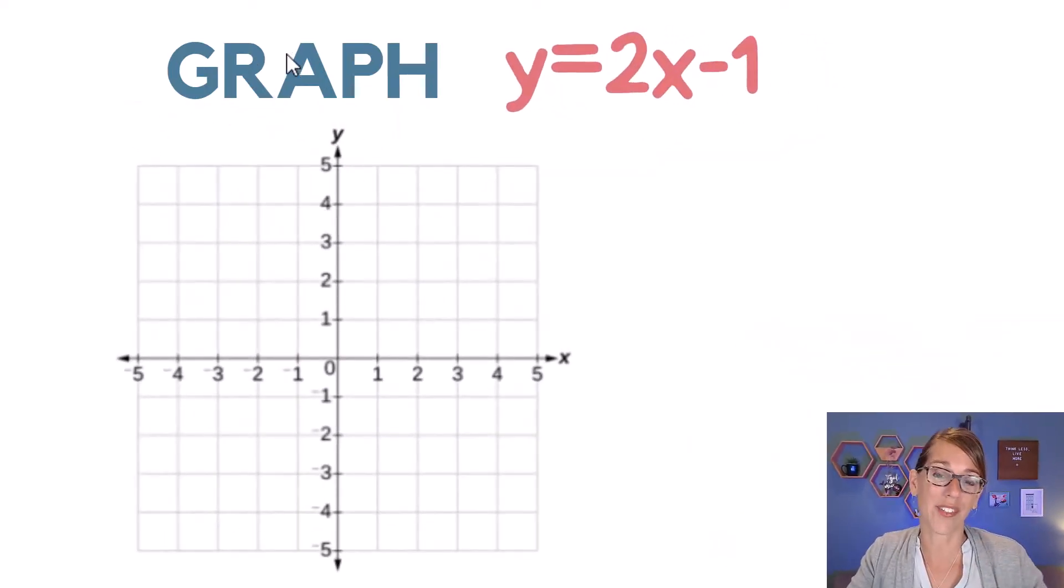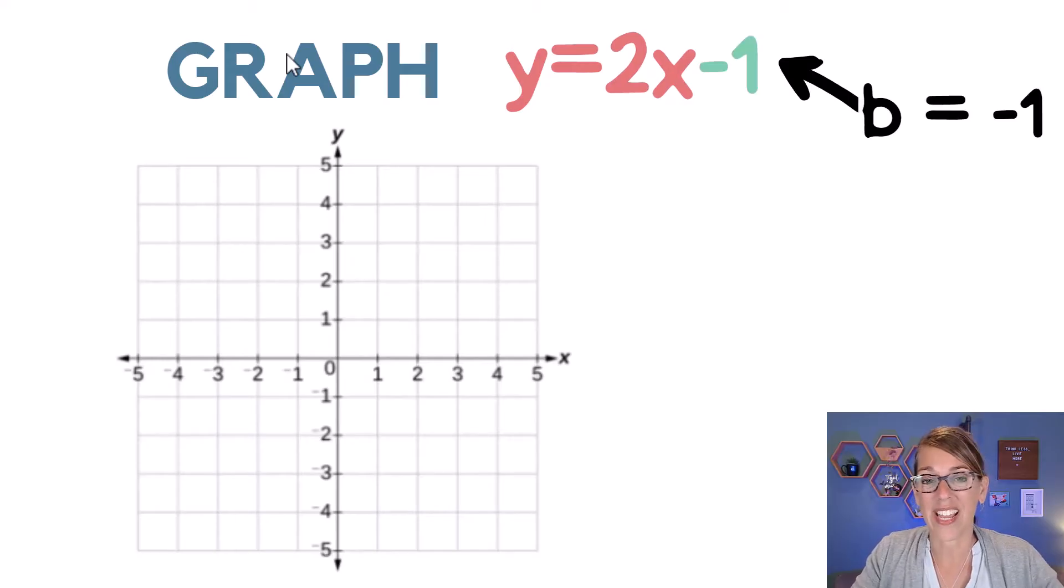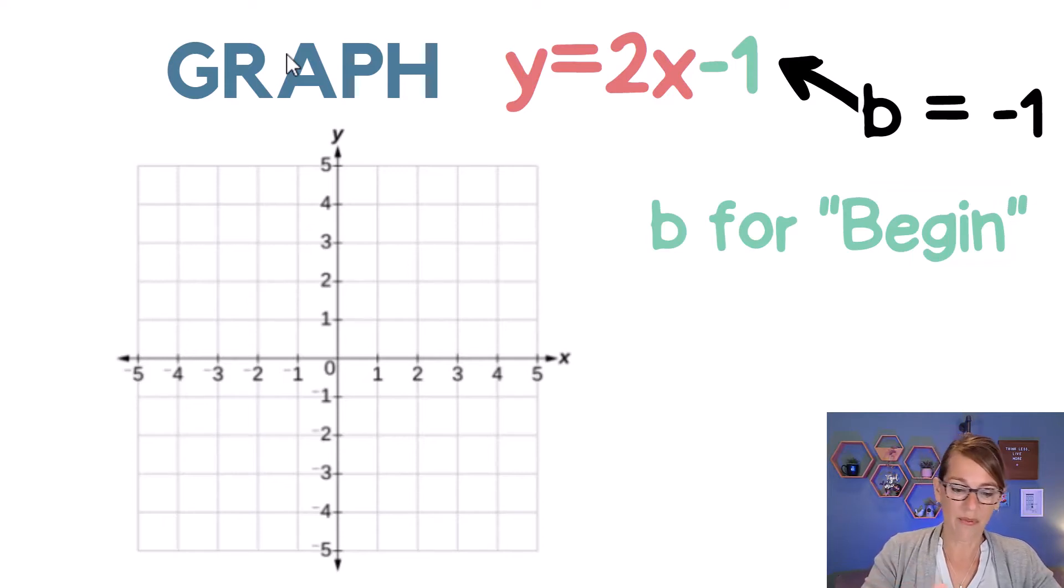Let's go ahead and get started with y equals 2x minus 1. Now I'm going to start with b, with that negative 1 on the end, and I think of b as my beginning place. So I want to plot that negative 1 on the y axis. That's my y intercept, so here it is, negative 1 on the y axis.